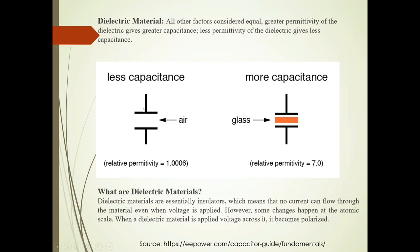See here, the dielectric material medium is air. Its relative permittivity is 1.0006. It gives less capacitance.